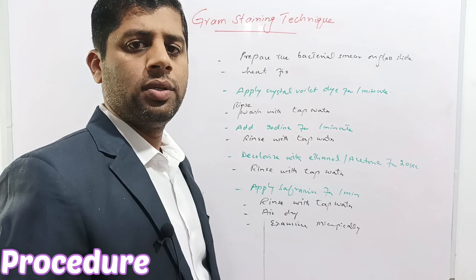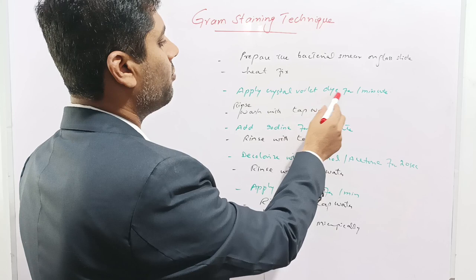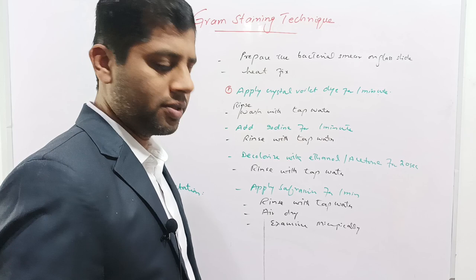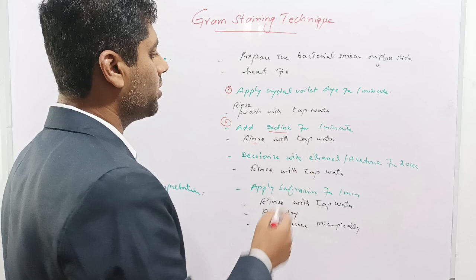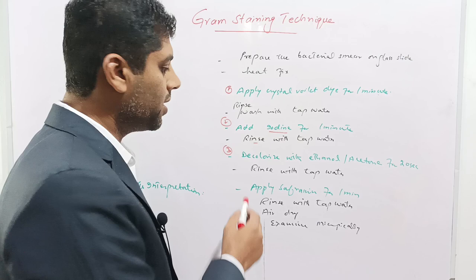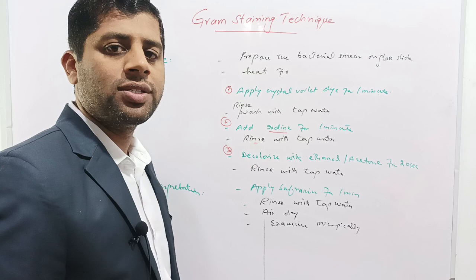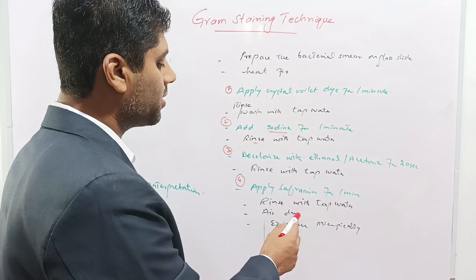Now the procedure of Gram staining. First, prepare the bacterial smear on a glass slide, then heat fix the slide. Apply the first reagent, crystal violet dye, for one minute — this is the principal stain. After one minute, rinse the slide with tap water. Then apply the mordant, iodine, for one minute for fixation of the stain into the Gram positive bacteria, then rinse again with tap water. Next, decolorize with ethanol or acetone for 20 seconds to wash away the excess stain, then rinse with tap water. Finally, apply safranine as a counterstain for one minute, rinse with tap water, air dry, and examine under the microscope.